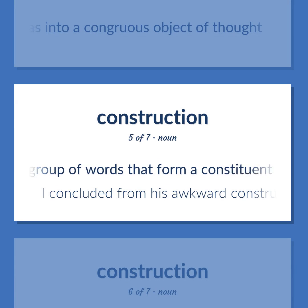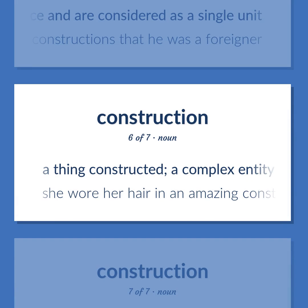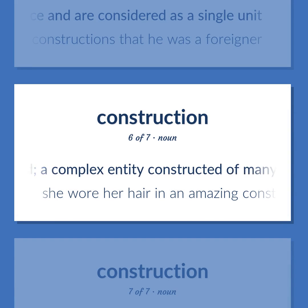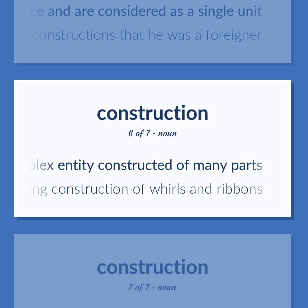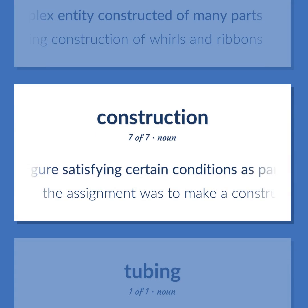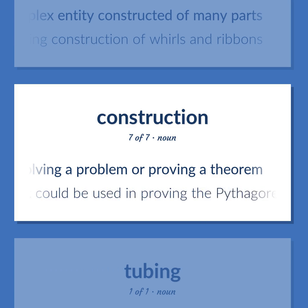Construction (continued): A group of words that form a constituent of a sentence, considered as a single unit. Example: I concluded from his awkward constructions that he was a foreigner. A complex entity constructed of many parts. Example: She wore her hair in an amazing construction of whorls and ribbons. Drawing a figure satisfying certain conditions as part of solving a problem or proving a theorem. Example: The assignment was to make a construction that could be used in proving the Pythagorean theorem.